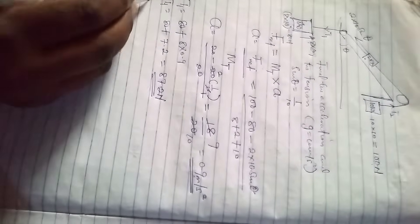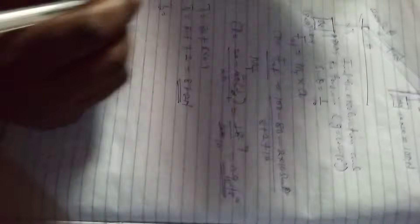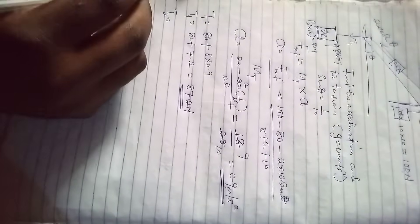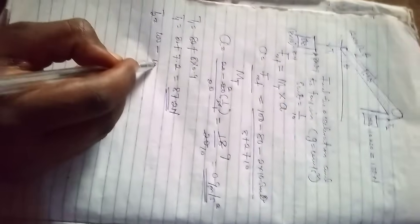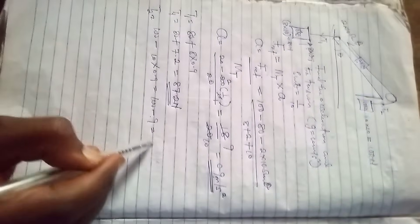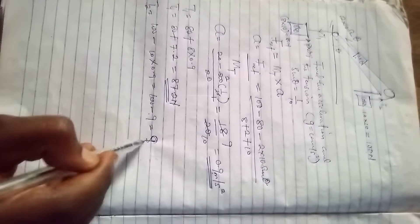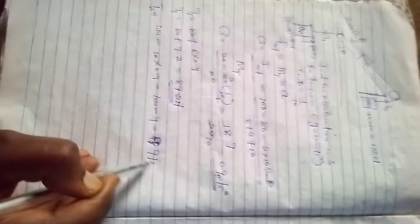Then the tension 2, T2, since it's coming down, it requires a lesser tension or a lesser force. So we are going to have 100 minus 10 times 0.9. 100 minus 10 times 0.9 is 9. So we have 91 Newton.